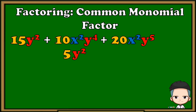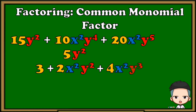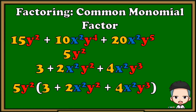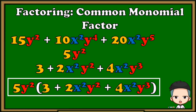15y squared divided by 5y squared equals 3. Copy the operation. Next, 10x squared y raised to 4 divided by 5y squared equals 2x squared y squared. Copy the operation. Last, divide the last term: 20x squared y raised to 5 divided by 5y squared equals 4x squared y cubed. Then arrange the answers: copy the common monomial factor and multiply it to the quantity of 3 plus 2x squared y squared plus 4x squared y cubed. Our final answer is 5y squared multiplied by the quantity of 3 plus 2x squared y squared plus 4x squared y cubed. And that's how we do factoring using common monomial factor.